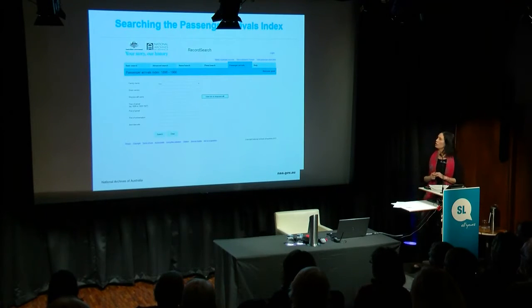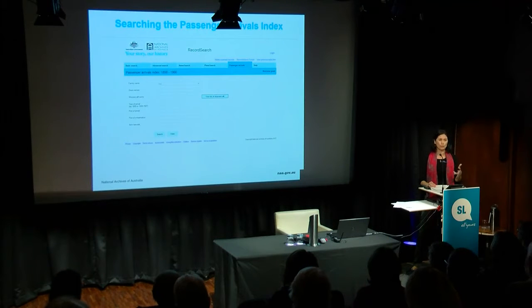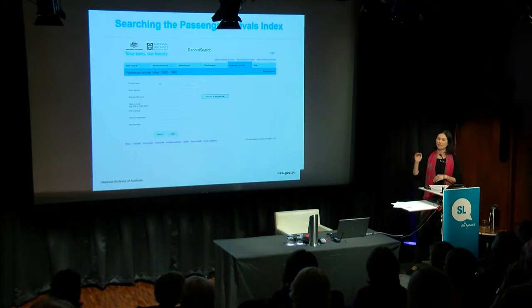I'm now going to show you how to conduct a search on our Passenger Arrival Index. I've just entered a person's surname, but if you have the information you can also enter the ship's name, year of arrival, or port of arrival. It's better to start off with a broader search and just enter a surname, because the more information you put in, the less results you'll get back. Not all passenger index entries include given names or ports of embarkation or disembarkation, so perhaps don't include a given name initially. If your initial search is unsuccessful, remember to try different or alternate spellings of names.